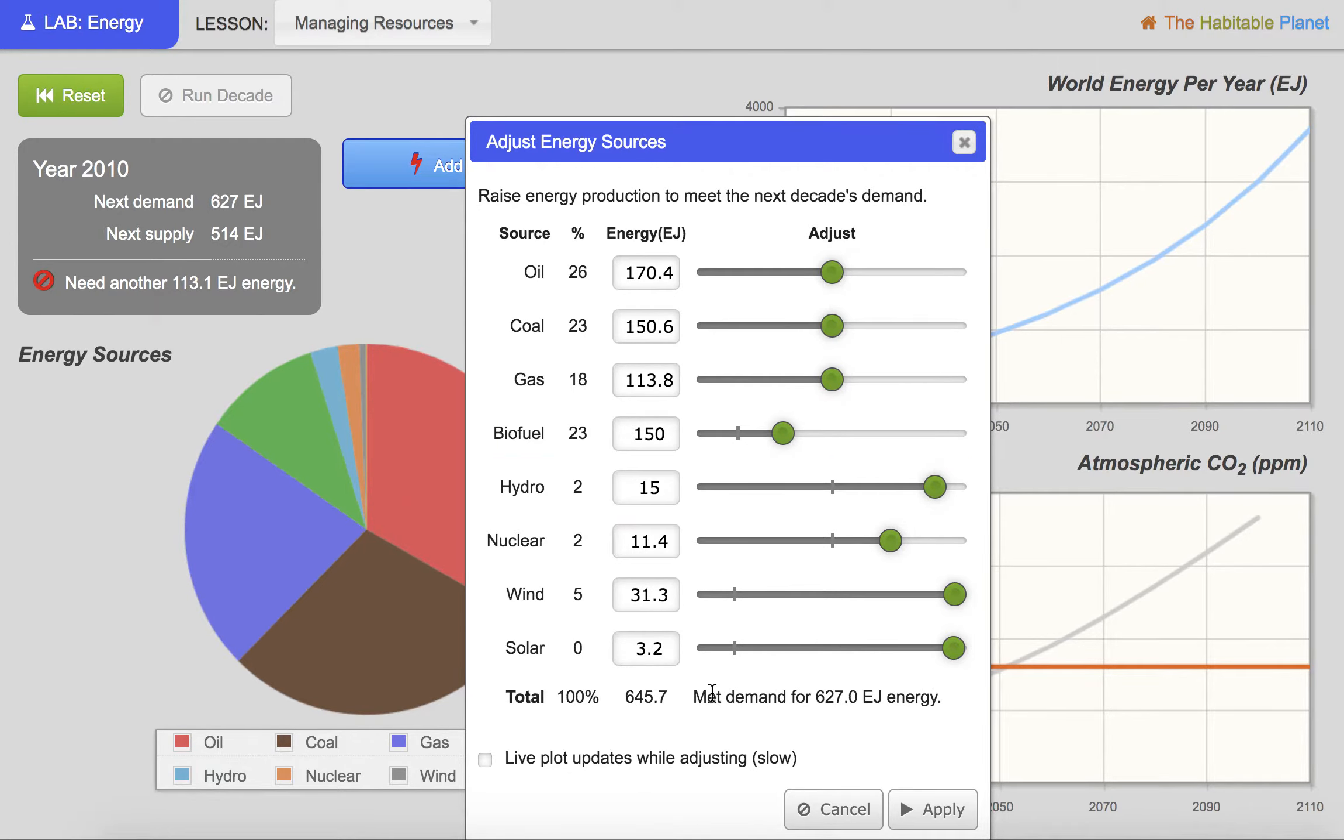So for example, right now, I have met the demand for energy, but I've actually created more energy than I need. So when you do this, you want to decrease until you get to the exact right amount of energy. And that's going to make it so that you're not creating extra energy. So you can actually decrease this a little bit more and you can type in if you're trying to get to an exact number.